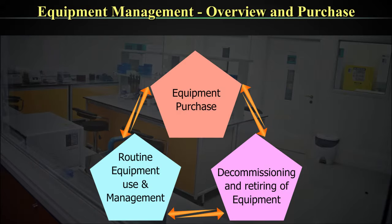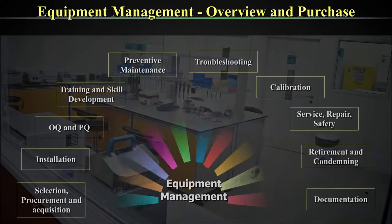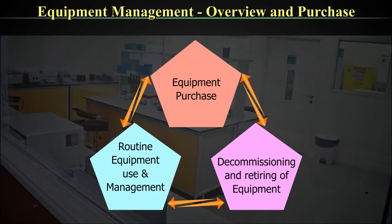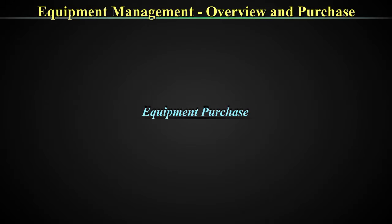The life cycle of equipment can broadly be classified as purchase, routine use, and decommissioning, under which there are multiple sub-components. If we look at the first slide, there are ten components which we condensed into three large components — purchase, use and maintenance, and decommissioning. We will now proceed to each of these in a more detailed way, having established the bird's eye view and the minor expansion.